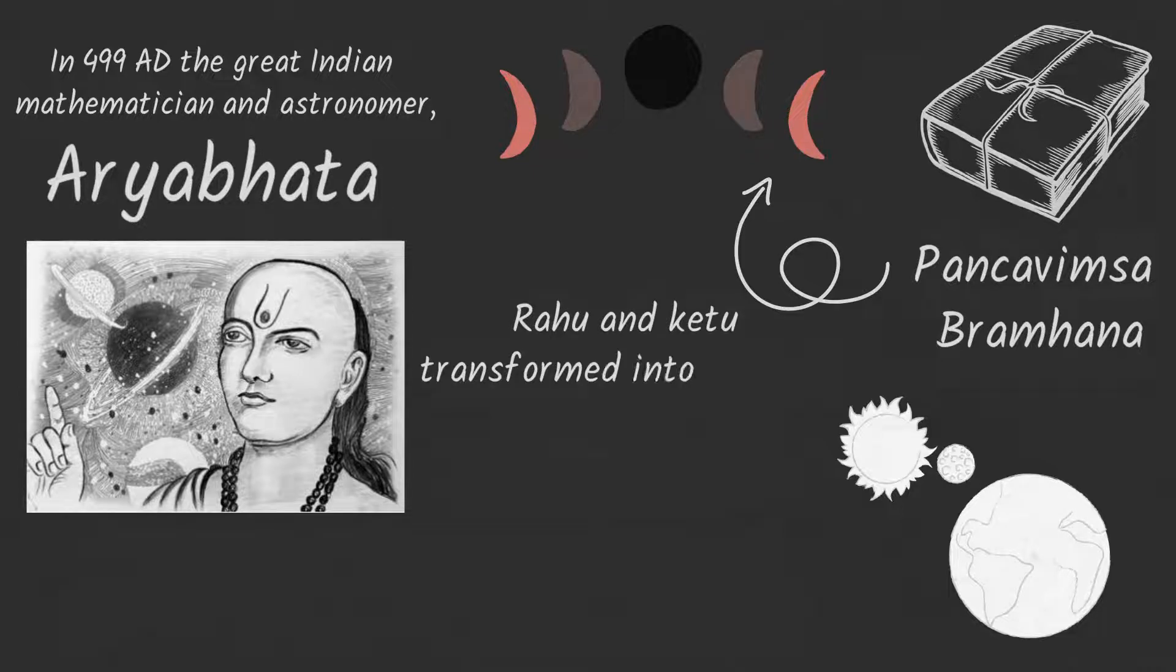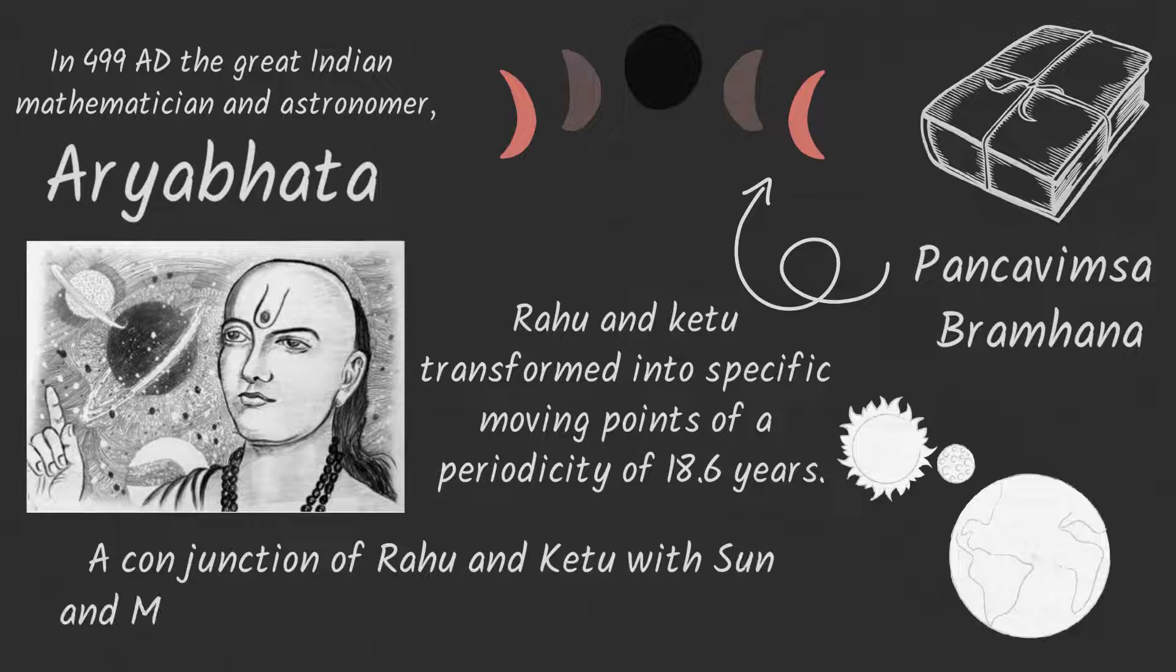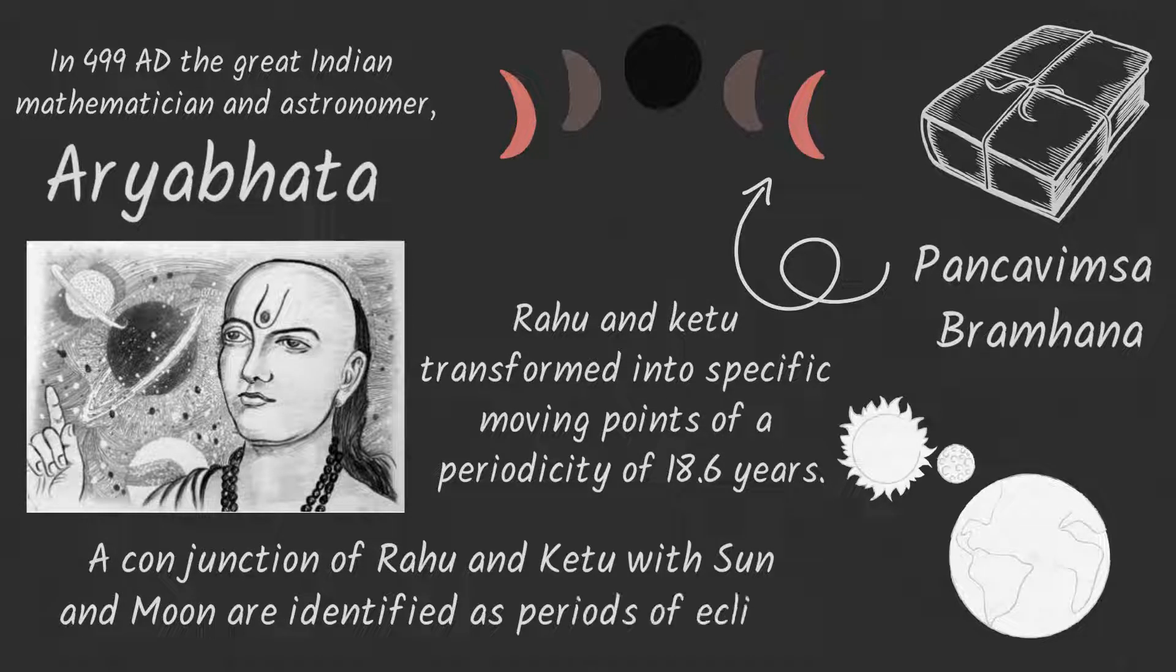After that, Rahu and Ketu transformed into specific moving points with a periodicity of 18.6 years, and the conjunctions of Rahu and Ketu with sun and moon are identified as the periods of eclipse.